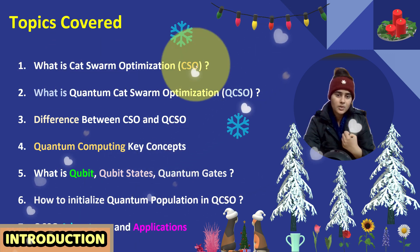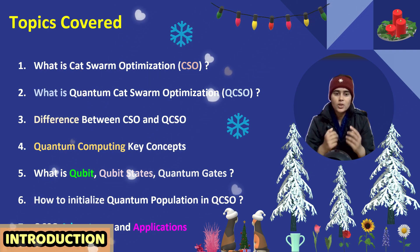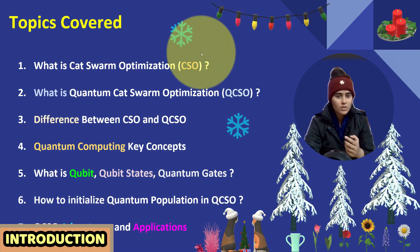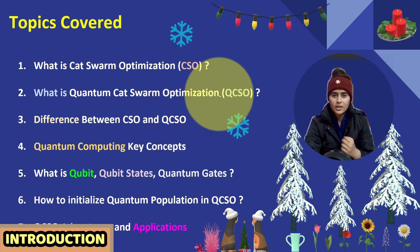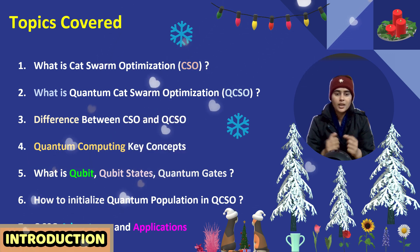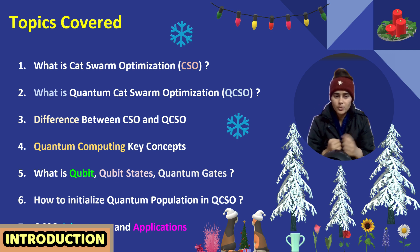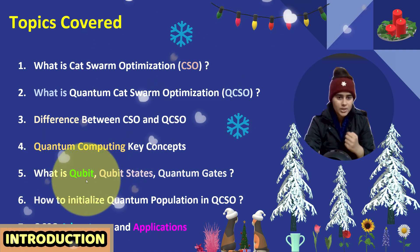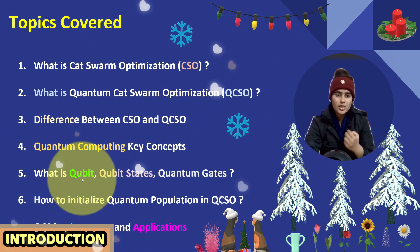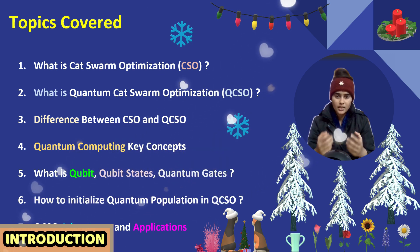Here you can see the topics covered in this video. First, what is cat swarm optimization algorithm. Next, what is quantum cat swarm optimization algorithm. Then, what is the difference between cat swarm optimization algorithm and quantum cat swarm optimization algorithm. Next, quantum computing key concepts used in quantum cat swarm optimization algorithm — different quantum computing principles like superposition, entanglement, quantum gates, and others. Next, what is a qubit, also known as quantum bit, qubit states, and quantum gates.